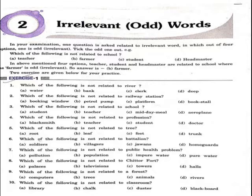Question number two: which of the following is not related to railway station? Your options are booking window, petrol pump, platform, book stall. The right answer will be B — petrol pump — as it is different from the rest of the three.